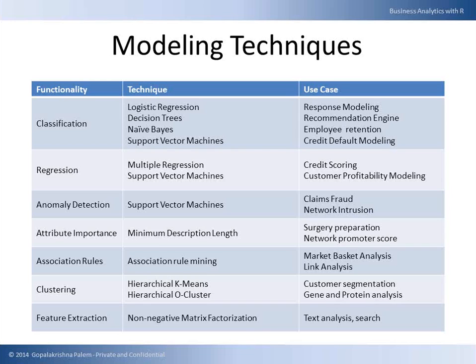There are many other things like association rules and attribute importance. Attribute importance is: given multiple attributes — a human being has many attributes like height, weight, how many fingers he has, the difference between his left leg and right leg, heartbeat, temperature, how fast he runs, how fast he walks, what is his timing, etc. So many attributes.